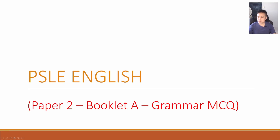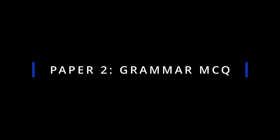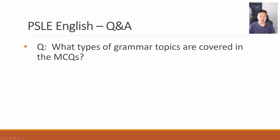Next, let's move on to Paper 2, where we are tackling Booklet A and Booklet B — starting with Grammar MCQ. What types of grammar topics are covered in the MCQs? All types of grammar topics are covered. Most notably, you should get a few on subject-verb agreement, prepositions, connectors, pronouns, etc. There's no escaping from grammar since it's a language paper.